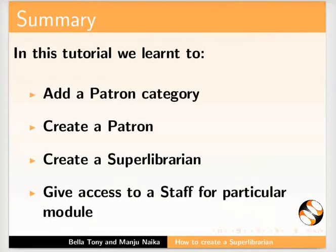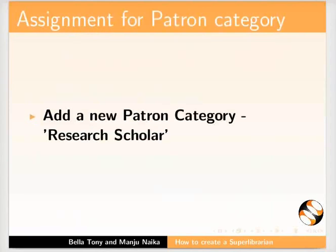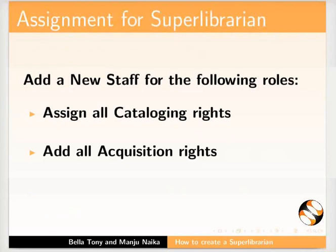In this tutorial, we covered: patron categories, creating a patron, creating a super librarian, and granting staff access to specific modules. For assignments: add a patron category for research scholar, complete the super librarian assignment, set up the required roles for staff, and assign cataloging and acquisition roles.